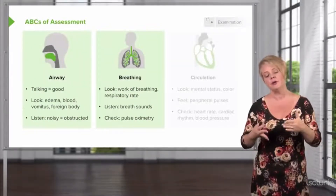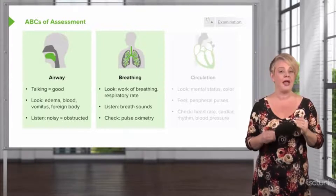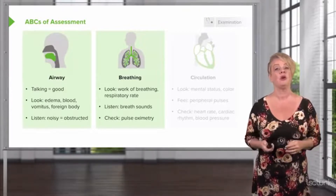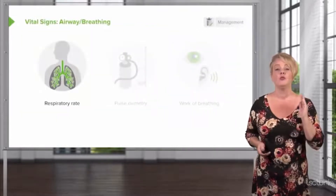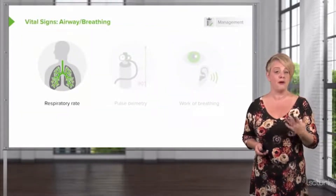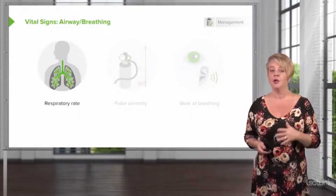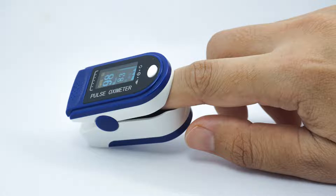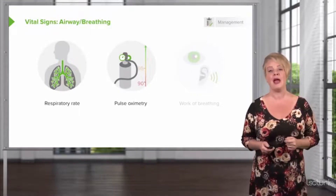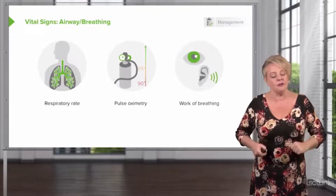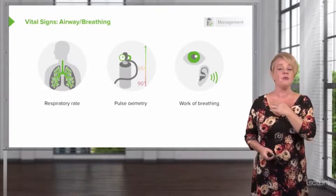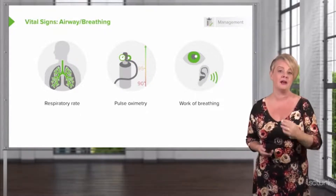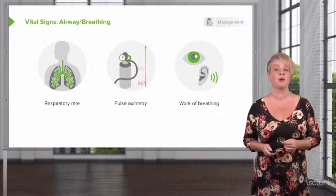A and B are usually assessed together, and the vast majority of A and B problems are really B problems — usually caused by pulmonary disease rather than primary airway emergencies. Respiratory rate is an important vital sign; a patient breathing very quickly may tire out and not be able to sustain that rate. Pulse ox is absolutely critical — it's the most important vital sign for A and B. Work of breathing is also key: if a patient is using a lot of metabolic energy to get air into their lungs, they won't be able to sustain that indefinitely, putting them at risk for respiratory failure.